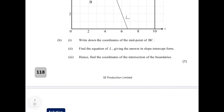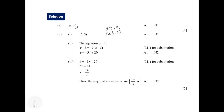Let's look at part B1: finding the coordinates of the midpoint of BC. We are given the coordinates of B as (2, 4) and C as (8, 6). We apply the midpoint formula — the average of the x-coordinates and the average of the y-coordinates gives us the new coordinates of the midpoint. Taking x1 = 2, x2 = 8, y1 = 4, y2 = 6, and replacing those variables with the assigned values, we get the midpoint coordinates as (5, 5).